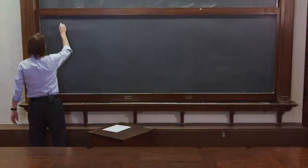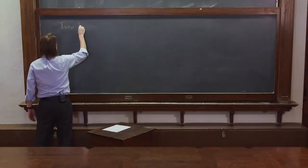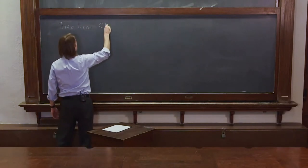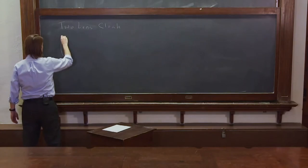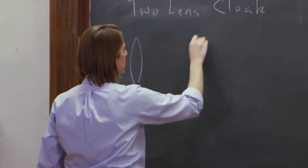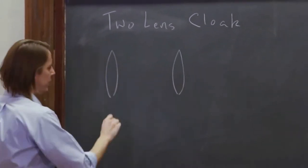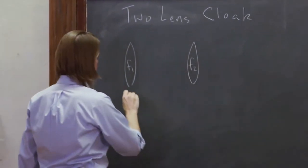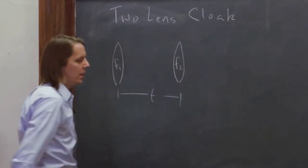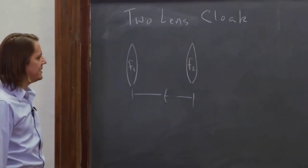Now we're going to design a two-lens cloak. So we'll start with a lens here, and a lens here, and say this one is focal length F1, and this one is F2, and they're separated by distance T.